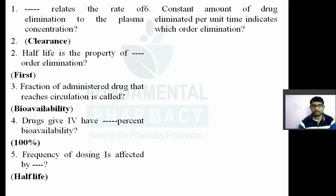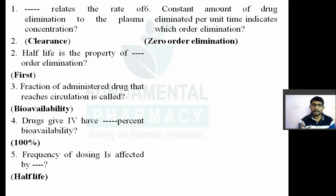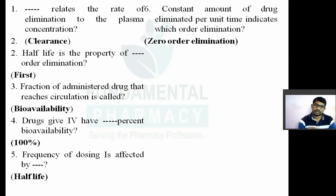Question number six: a constant amount of drug eliminated per unit time indicates which order of elimination? The answer is zero order. Zero-order elimination means a constant amount of drug is eliminated per unit time regardless of plasma concentration. The concentration of drug in plasma doesn't matter — a constant amount of drug will be removed from the body per unit time. In first-order elimination, a constant percentage of drug is removed per unit time, proportional to the plasma concentration.